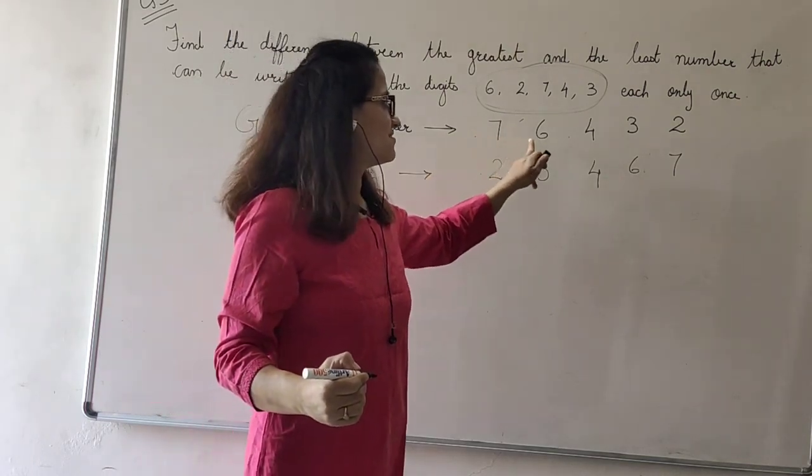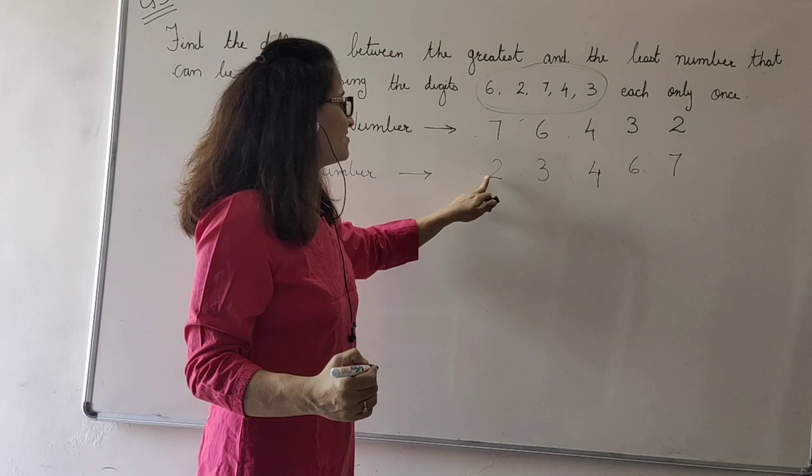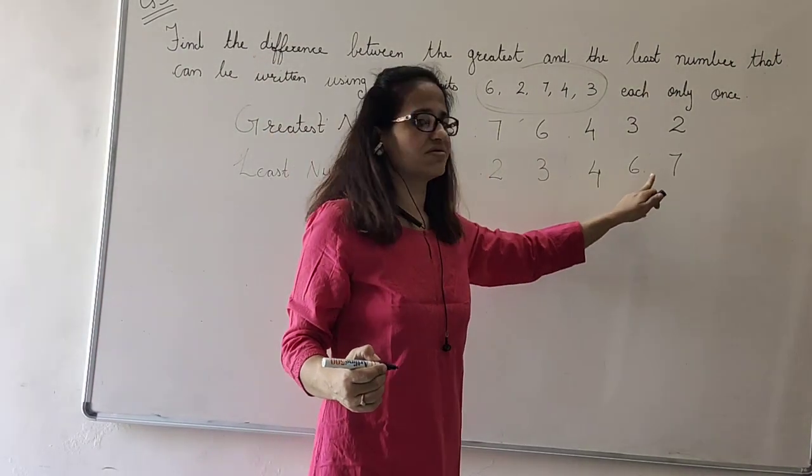The greatest number formed is 76,432. The smallest number, or the least number formed, is 23,467.